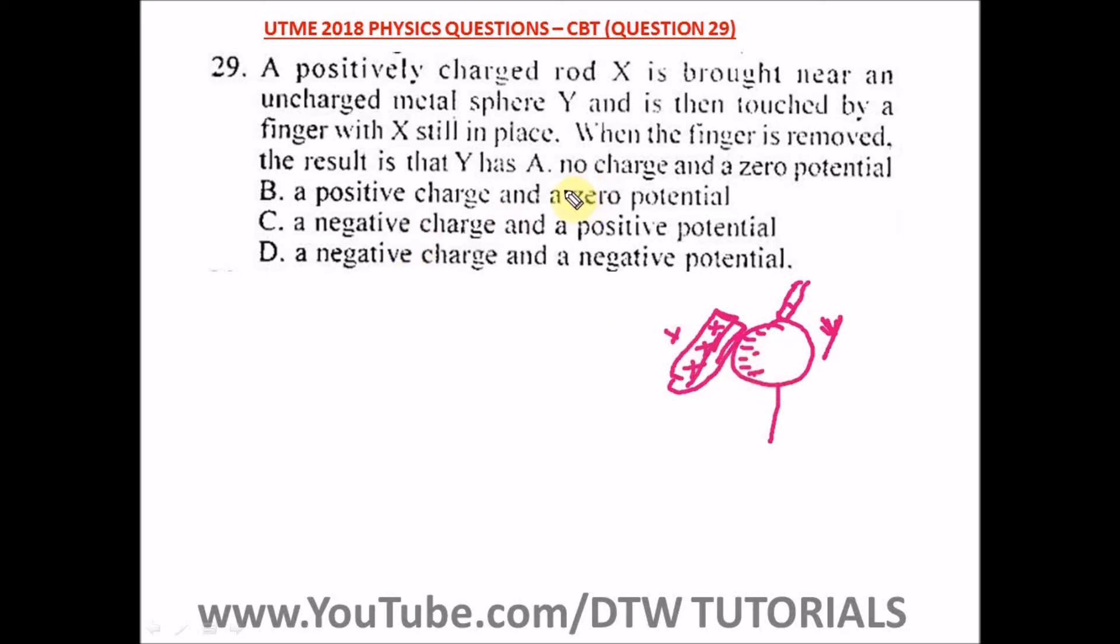So what are our options? The first option says no charge and a zero potential. B says a positive charge and a zero potential. C says a negative charge and a positive potential. D says a negative charge and a negative potential. So our right option here is option D: a negative charge and a negative potential.